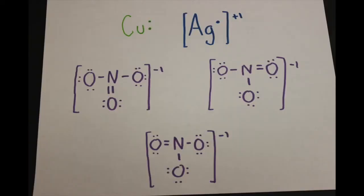Here are the dot diagrams for copper, silver plus 1, and nitrate minus 1.